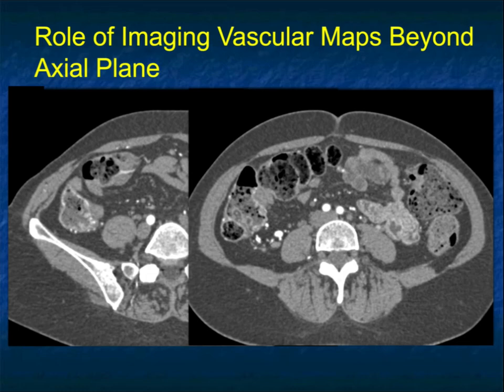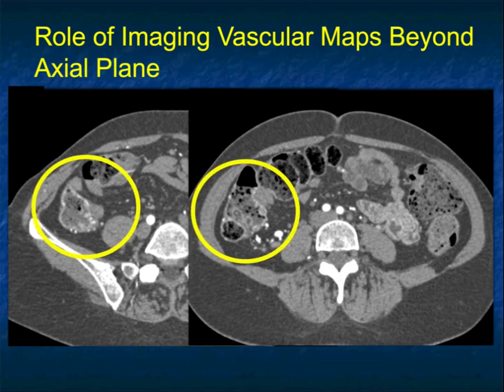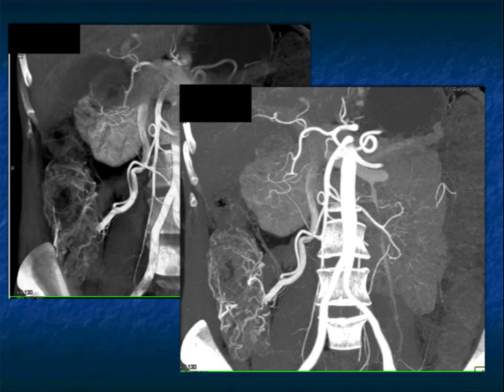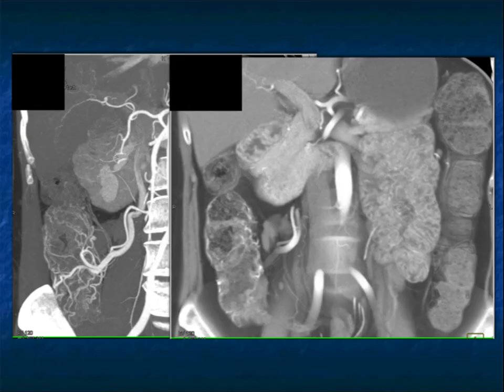It's very important to do reconstructions including MIP imaging when you're looking at bowel. Here's a good example: a patient with GI bleed, initially read as negative. If you look at the cecum carefully, it looks like there's more enhancement than there should be. But on a coronal MIP image, look at those prominent vessels, the vessel tortuosity, and that feeding ileocolic vessel — beautifully shown. This was angiodysplasia, the source of bleeding, and eventually it was resected. On slices alone, even in the coronal view, you can't appreciate it, but you really can on MIP imaging.